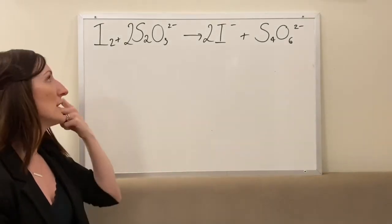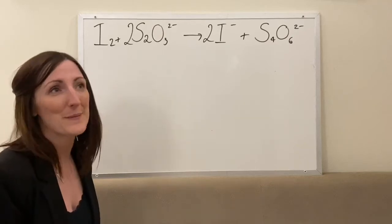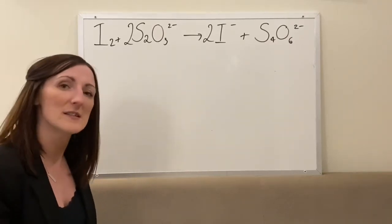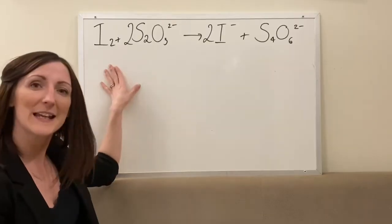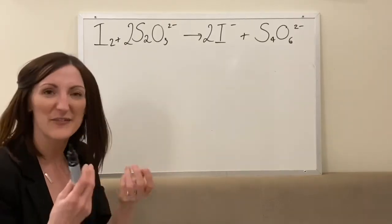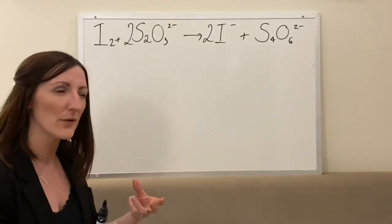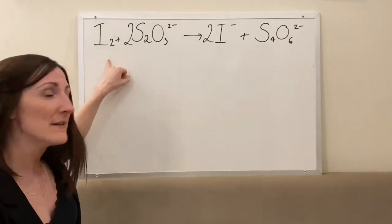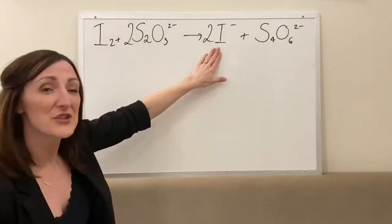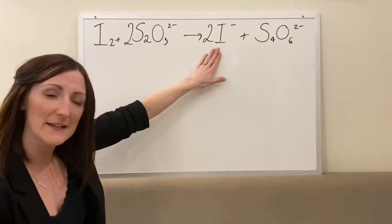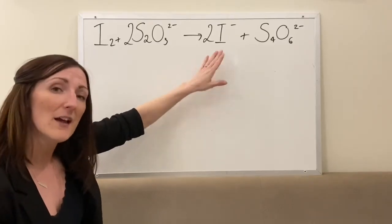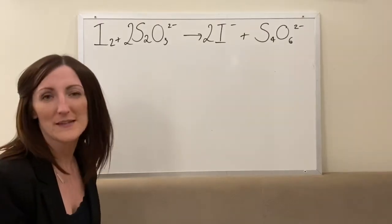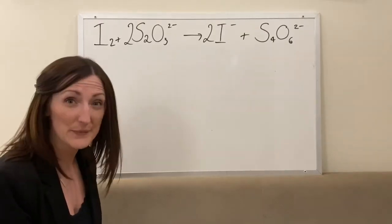What we can do — and hopefully you're screaming at me now — we can add starch, because starch when we've got iodine goes that really nice blue-black inky colour; it's really obvious. So we add that, and then once all the iodine has been reduced to iodide and there's no longer any iodine, the blue-black colour is going to vanish, and we know that's our end point.